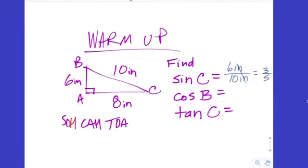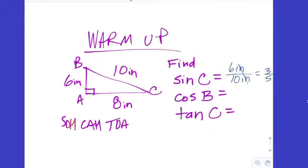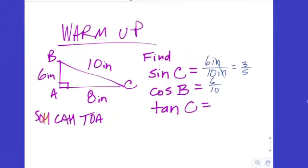Now if we want the cosine of B, B is our reference angle. Cosine is adjacent over hypotenuse. We have two sides adjacent to B, but one of them is the hypotenuse, and the hypotenuse never changes — so when we say adjacent, we really mean the non-hypotenusal adjacent side. That gives us 6 over 10, which simplifies to 3 fifths. So sine of C equals cosine of B — they're both 3 fifths.